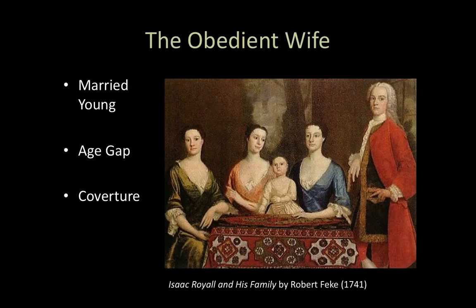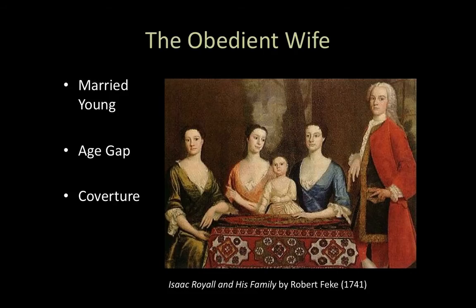In addition to losing her name, coverture imposed other restrictions. A wife couldn't sign a contract, serve on a jury, or act independently to buy property. Unless her husband signed a prenup, any property she brought into the marriage he could do with as he pleased. For example, if Abigail had a beloved horse named Fluffy, once she married she lost all legal control over Fluffy — and if John decided to sell Fluffy to go drinking for seven days straight, there was nothing Abigail could do to stop him. Similarly, any money she earned — say, as a teacher — would legally belong to her husband.